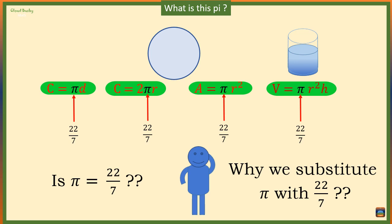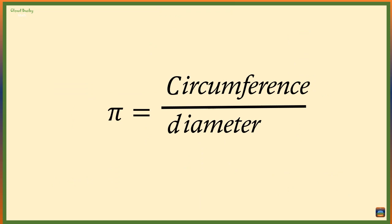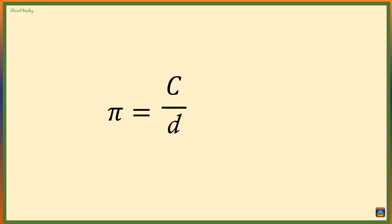Hello guys and welcome. Now pi is the ratio of the circumference of a circle to its diameter. This ratio indicates how many diameters are equal to the circumference of a circle.